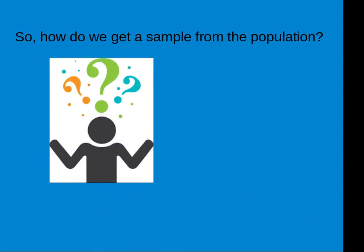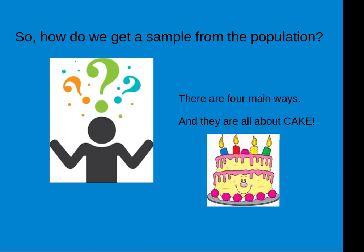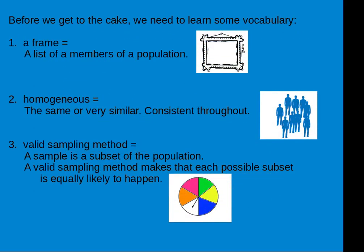So, how do we get a sample from the population? There are four main ways, and they're all about cake. Before we get to the cake, we need to learn some vocabulary. First, a frame — a frame is a list of all members of the population, all individuals of a population. Number two, homogenous — homogenous here means the same or very similar, consistent throughout, or uniform throughout. And number three, a valid sampling method — a valid sampling method means that each possible subset is equally likely to happen.